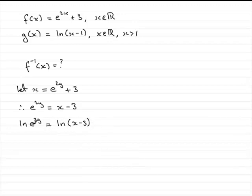Now 2y, we can bring out the front of this natural log, and we get 2y natural log of e. And natural log of e is 1, so we're just left with 2y. So 2y equals the natural log of x minus 3.